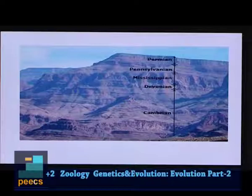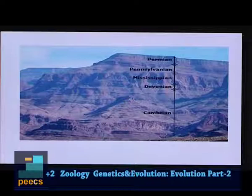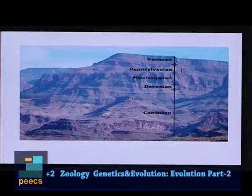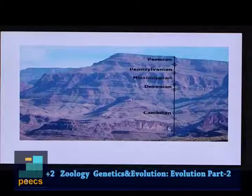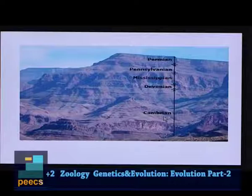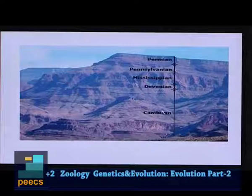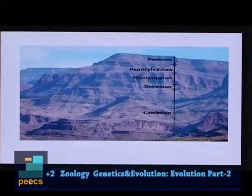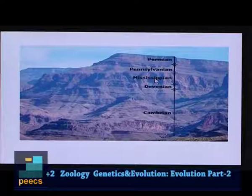In this picture, you can see the cross-section of a sedimentary rock with different layers, each representing a particular geological time period — starting from the Cambrian (the ancient era), then Devonian, Mississippian, Pennsylvanian, Permian, and so on. The lowest stratum represents the oldest rock and the topmost one represents the latest.